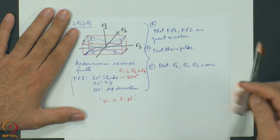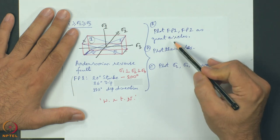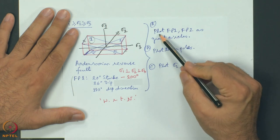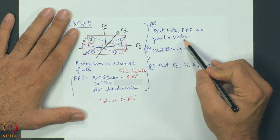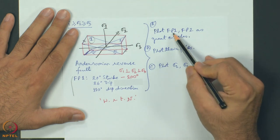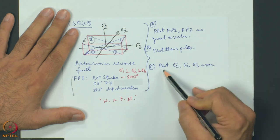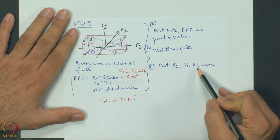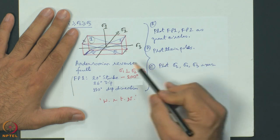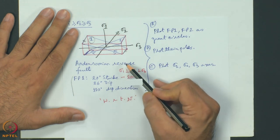Now let us look at the problems. Plot fault plane 1 as a great circle. Plot fault plane 2 as a great circle in the stereonet. Plot the poles of fault plane 1 and fault plane 2, and then plot sigma 1, sigma 2, and sigma 3 principal stress axes in the case of this Andersonian reverse fault.